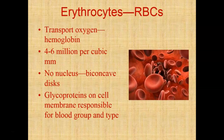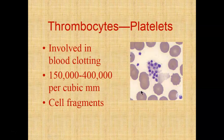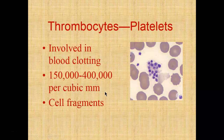Your thrombocytes are your platelets. You can see the tiny purple spots in the image. They fragment off a large megakaryocyte — a great big monster cell that just breaks apart, and those fragments become your platelets. They're involved in the blood clotting process. There are normally 150,000 to 400,000 platelets per microliter in a blood sample.